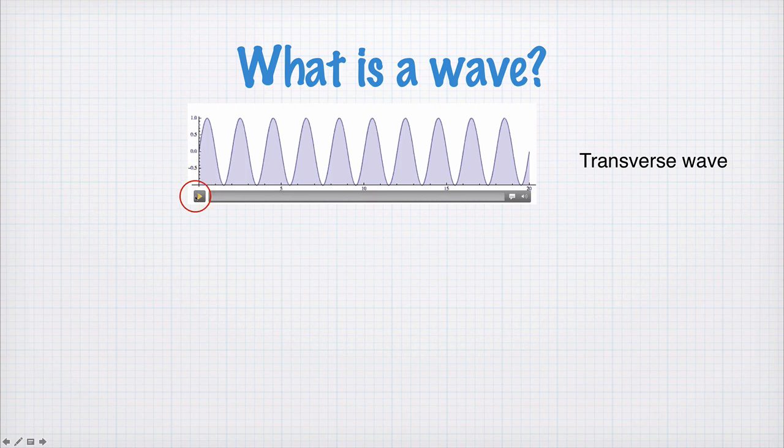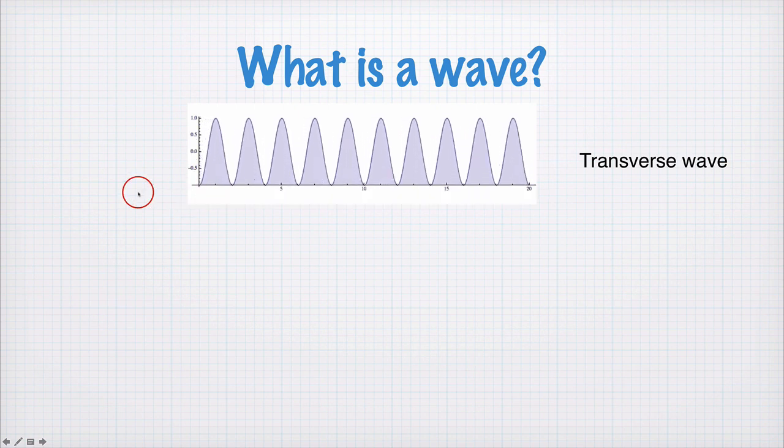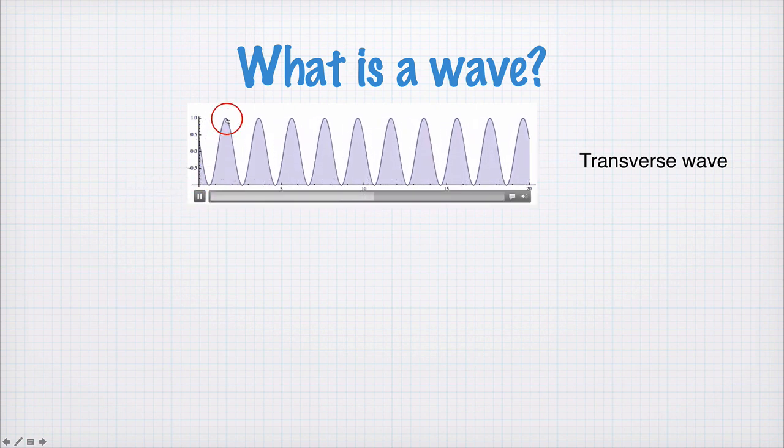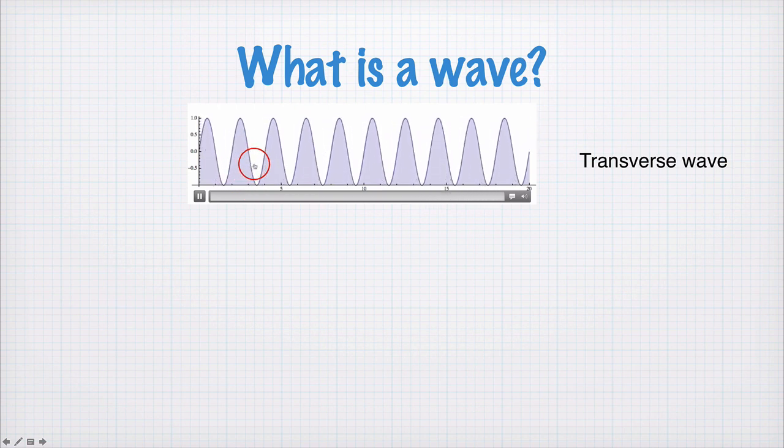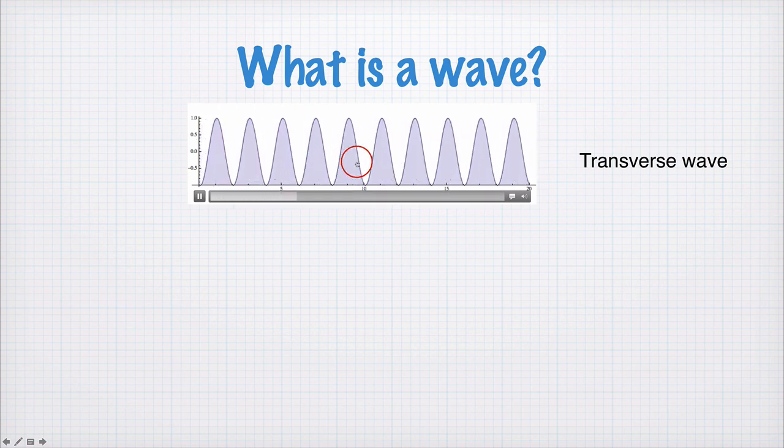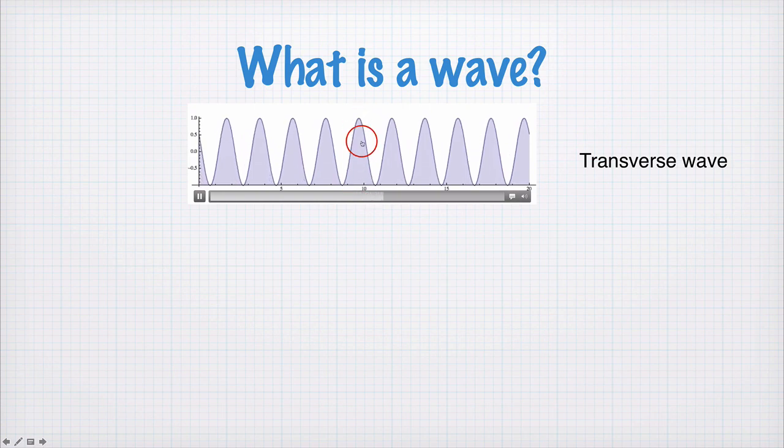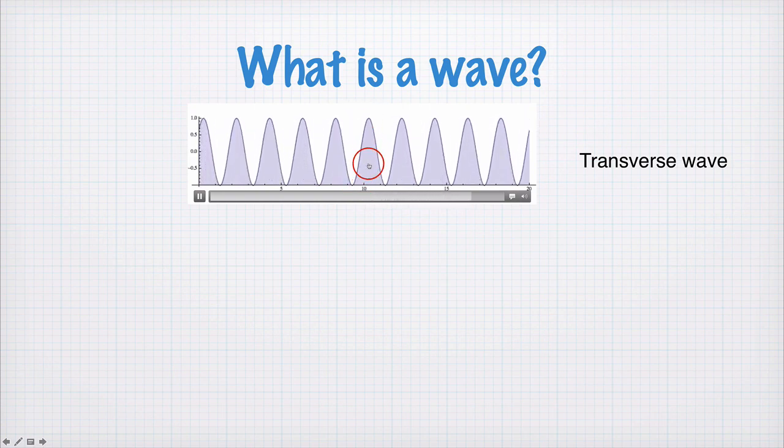So this is a kind of wave you're probably pretty familiar with, this is what a water wave looks like, these are the peaks and troughs of the wave, and this is known as a transverse wave because the wave moves horizontally, but the waving motion of the particles in the water for example are up and down.